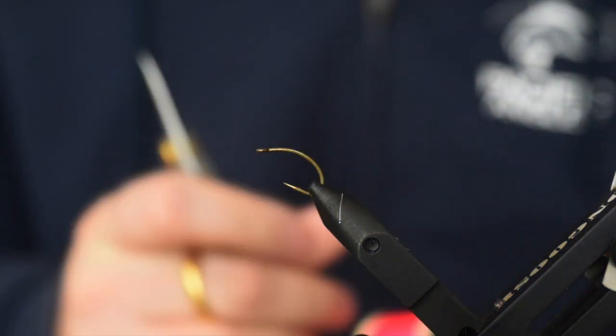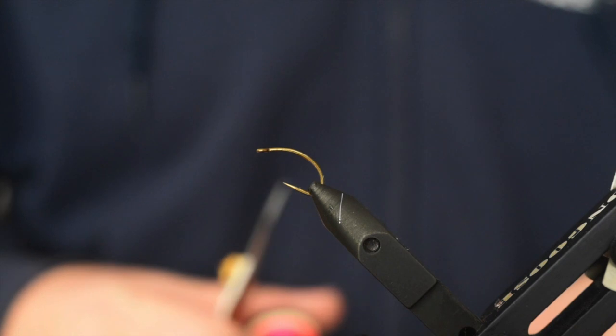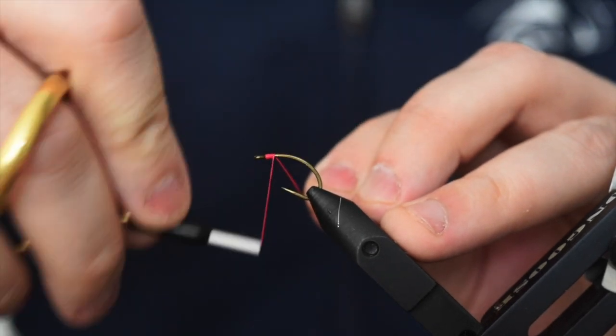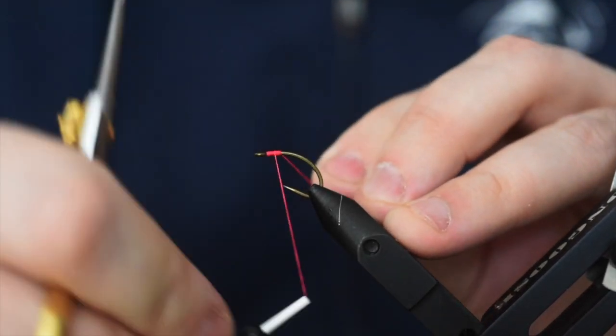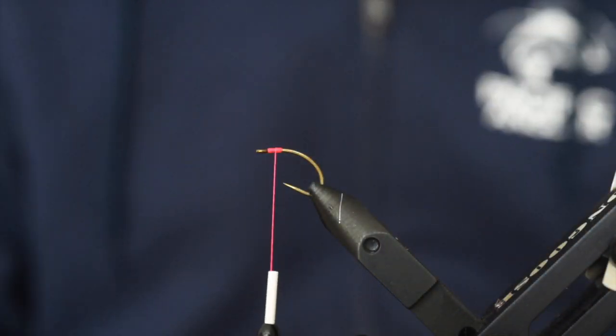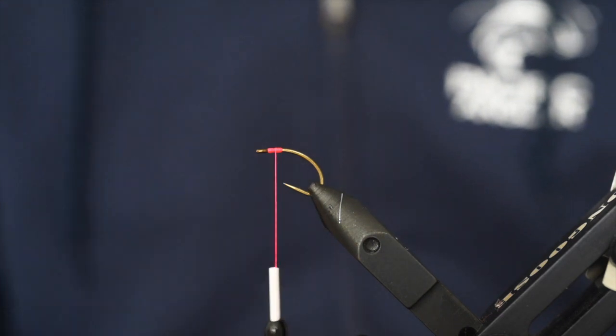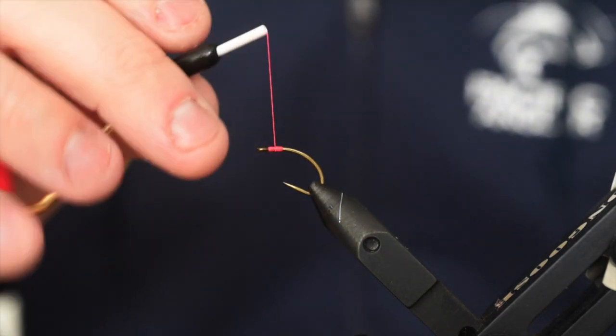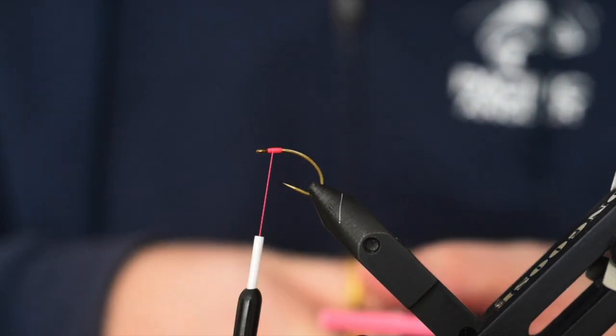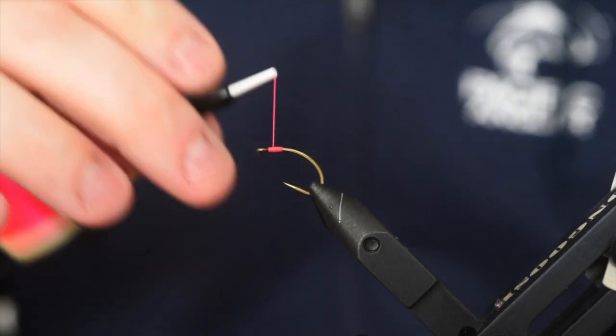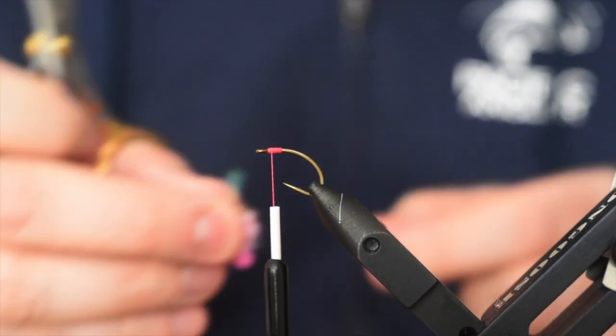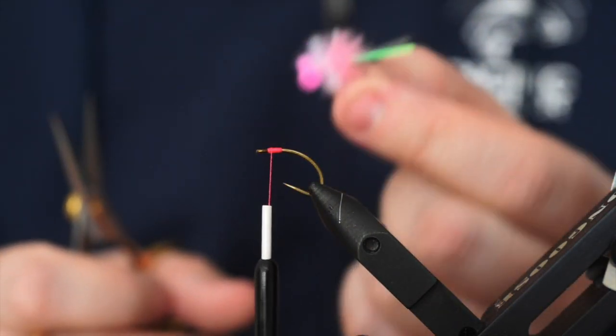For a hook, I'm using a Mustad C67S in a size 6, I believe. I like this fly to be tied on a larger hook. When fish are hammering these things, they absolutely clobber them and annihilate them. So if you're like me fishing still waters, I let the fish go. I'm not a big trout fan, so they're fun to catch, not so fun to eat, and I like to let them go. So I fish a bigger hook so that they don't swallow it. Lots of mortality can be related to these flies because they just crush them so hard.